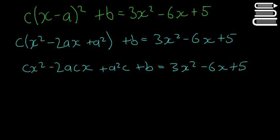So we say, I'm going to use orange, this cx squared has to be equal to this 3x squared because they're both x squared. Then this 2ax or minus 2acx has to be the same as this minus 6.